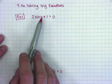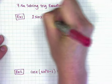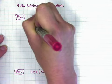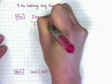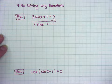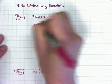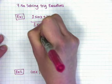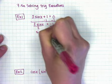So for the first one, if I'm going to solve this for x, I'm going to start by taking away 1 from both sides. I get 2 sine of x equals negative 1, and then I would divide both sides by 2, and I get sine of x equals negative half.